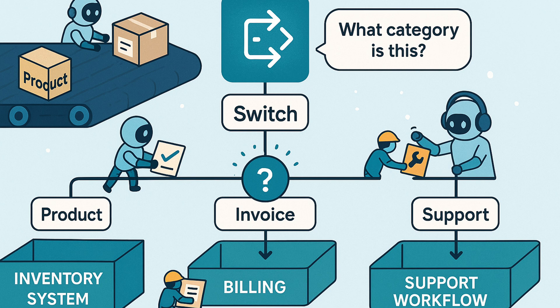Essentially, the switch node routes your workflow conditionally based on comparisons, supporting multiple output routes. It's like asking what category does this item fall into and then handling each category separately. This makes your workflow much more flexible when dealing with more than two choices.